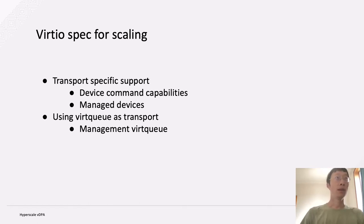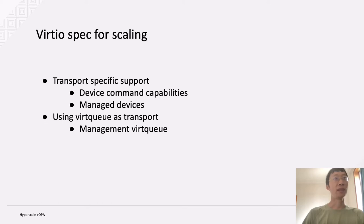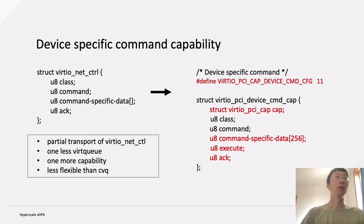Based on our previous discussions, we can add support in the VDPA spec. This means introducing transport-specific support for device command capabilities, or introducing the management device in a transport-specific way, or introducing a VDPA queue as a transport — something like a management virtqueue. Here is the device-specific command capability: we can introduce a new capability to accept commands from the driver. The actual commands and command-specific data are device-specific, but for virtio-net, this is essentially a replacement or alternative for the control queue.